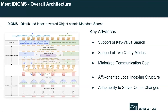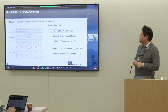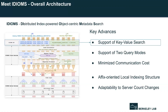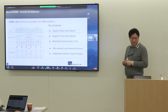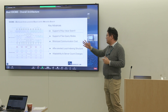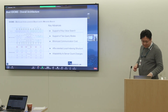Last year, I was fortunate to return to the lab and continue my research on metadata search, resulting in this work called IDIOMS: Distributed Index-Powered Object-Centric Meta-Search. This work features a three-layer architecture: an API layer supporting key-value search on metadata attributes, a client runtime layer achieving minimized communication cost with support for two query modes, and a server runtime layer achieving affix-oriented local indexing and adaptability to server count changes.